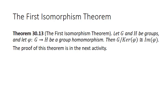What we saw at the end of that activity is formalized by the first isomorphism theorem: let G and H be groups and let phi from G to H be a group homomorphism. Then G mod the kernel of phi is isomorphic to the image of phi. It's a really cool and unexpected result — when you take the cosets of the kernel of a homomorphism, those cosets are isomorphic to the image of the homomorphism.